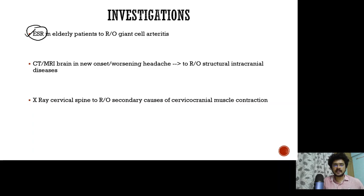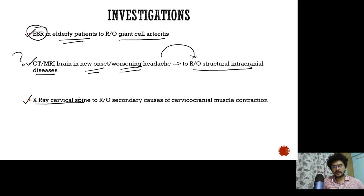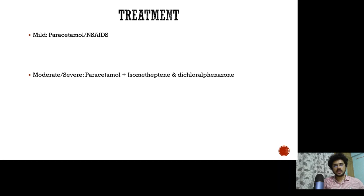Coming to investigations, it's vital to take an ESR for elderly patients to rule out temporal arthritis or giant cell arthritis. Neuroimaging — CT or MRI — is indicated when the patient is developing a new onset tension type headache or if it is becoming worse than before, to rule out structural intracranial diseases. In chronic tension type headache with cranioservical muscle tenderness, take an X-ray of the cervical spine to rule out secondary causes like cervical spondylosis.